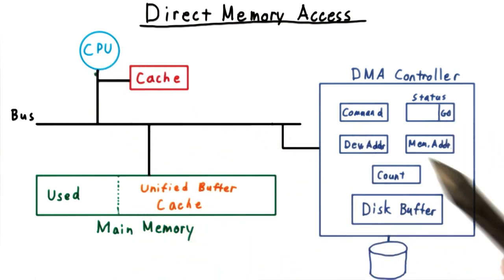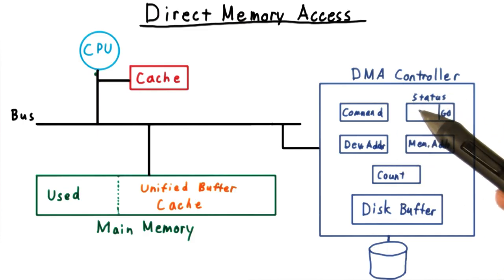The CPU then goes on about its business while the device controller uses the memory bus to either read or write the data.